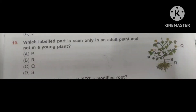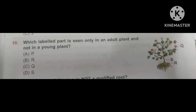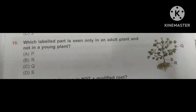Question number 10. Which labeled part is seen only in an adult plant and not in a young plant? Option A: P. Option B: R. Option C: Q. Option D: S as shown in the figure. The correct option is Q. Q is the flower. We can see that small plants normally have roots and leaves, but flowers appear only in adult plants.